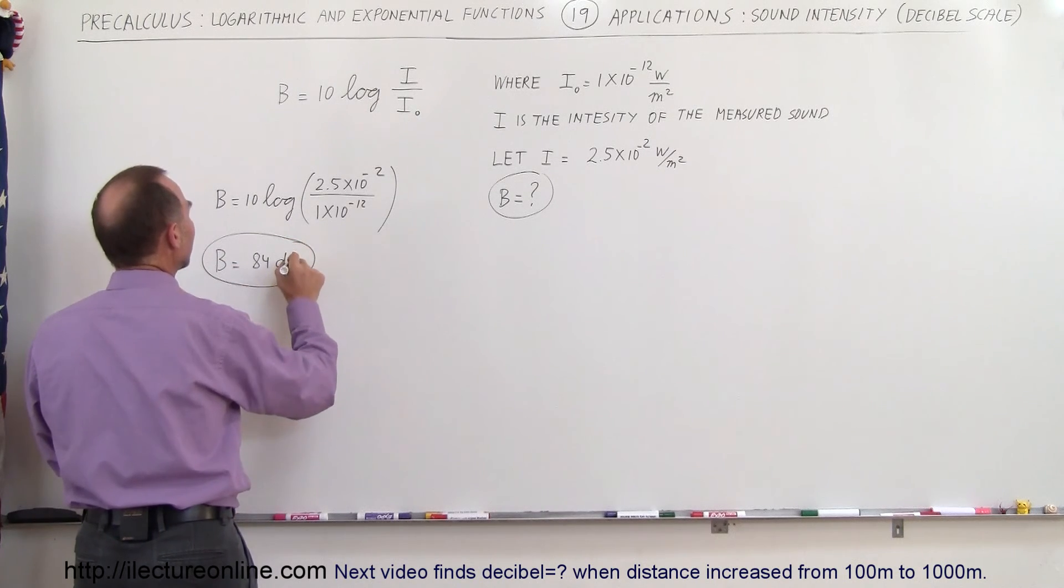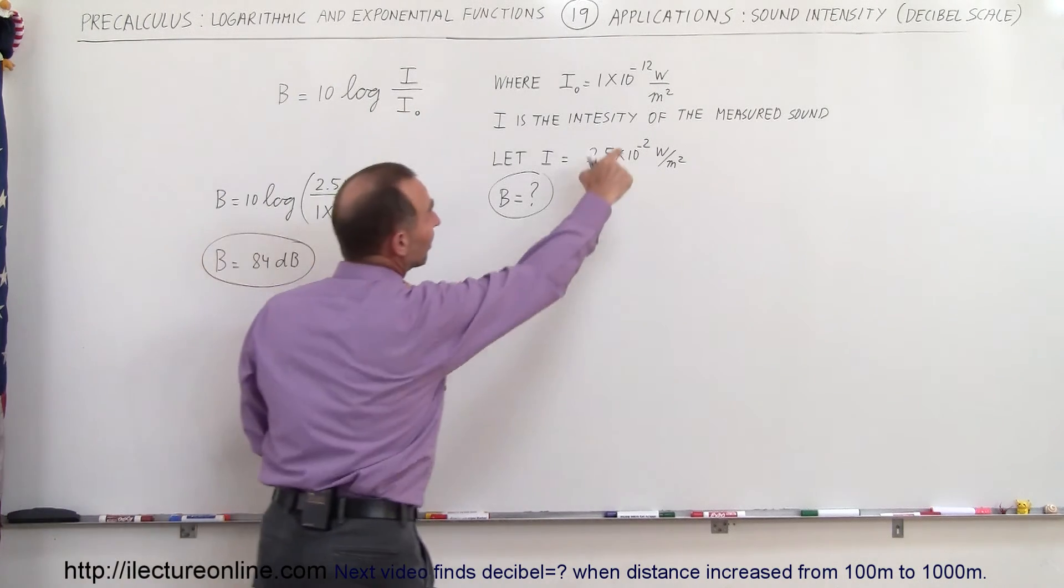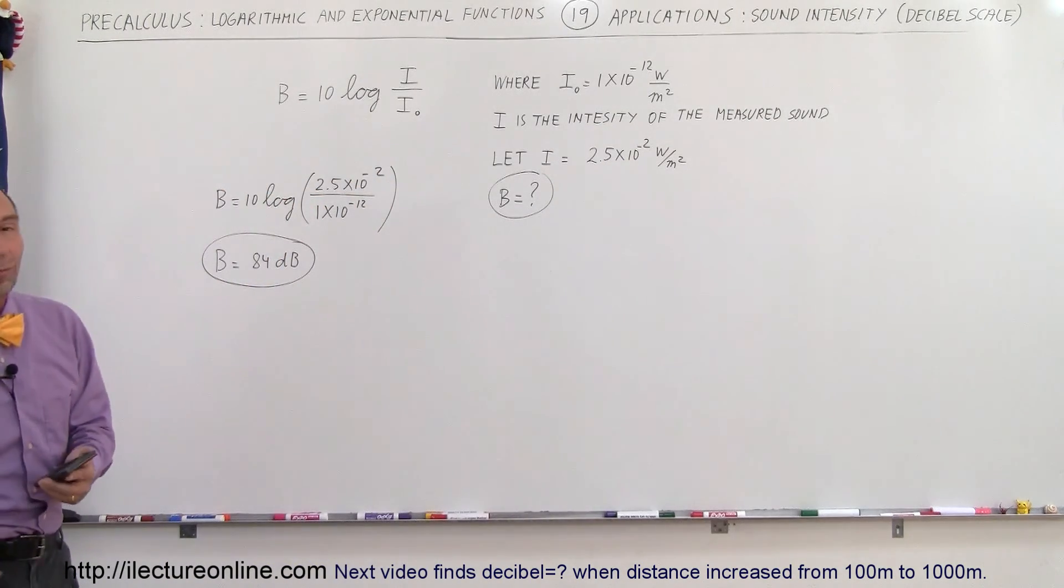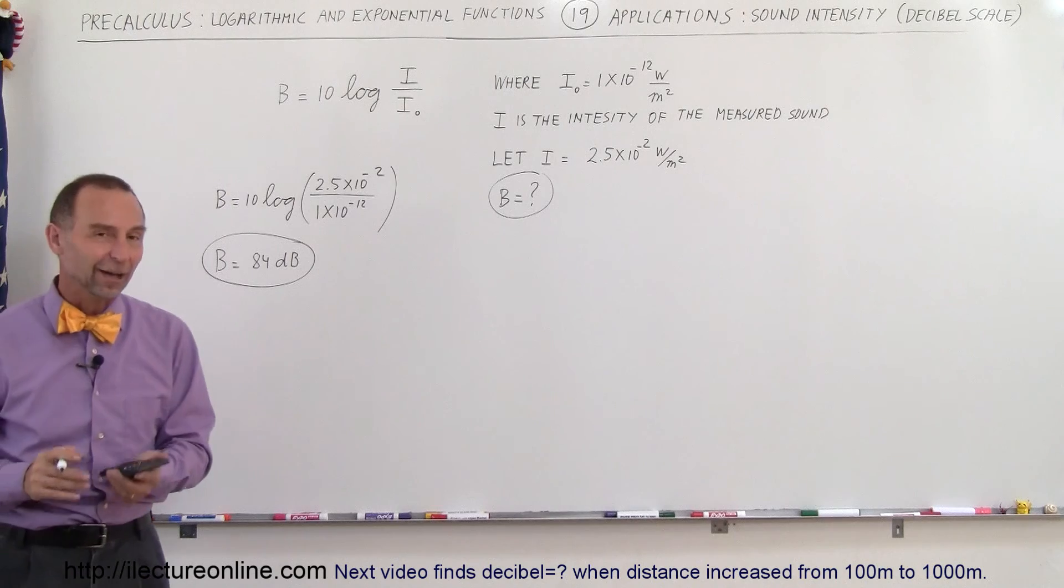So that would be the sound intensity in decibels for a sound that has the intensity of 2.5 times 10 to the minus 2 watts per square meter, and that's how that's done.